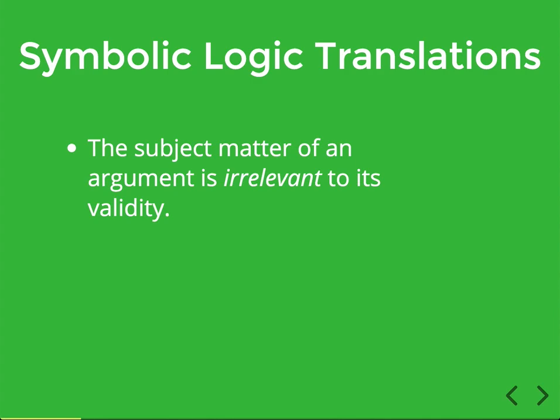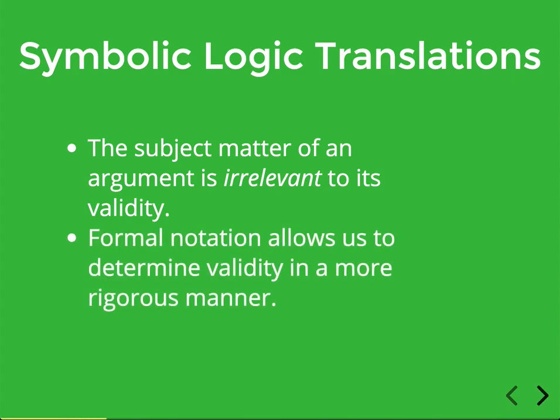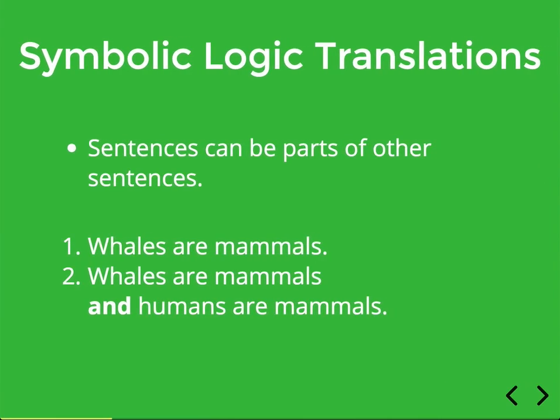In that sense, the actual subject matter of an argument — whether it's about an election, religion, or what have you — is totally irrelevant from the point of view of logic. It turns out we can just replace all the individual sentences in an argument with symbols or variables that stand in for those sentences, and study the pattern of reasoning in a more abstract and precise manner. Using formal notation allows us to identify validity in a much more rigorous way.